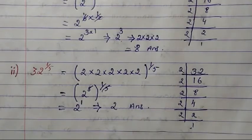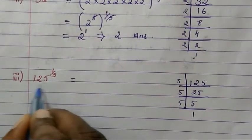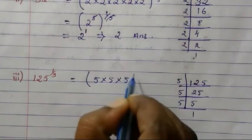For the third question, same way, find the prime factorization for 125. I have done the prime factorization, so 125 can be written as 5 × 5 × 5 and the power as it is. How many times? 5 appears 3 times.